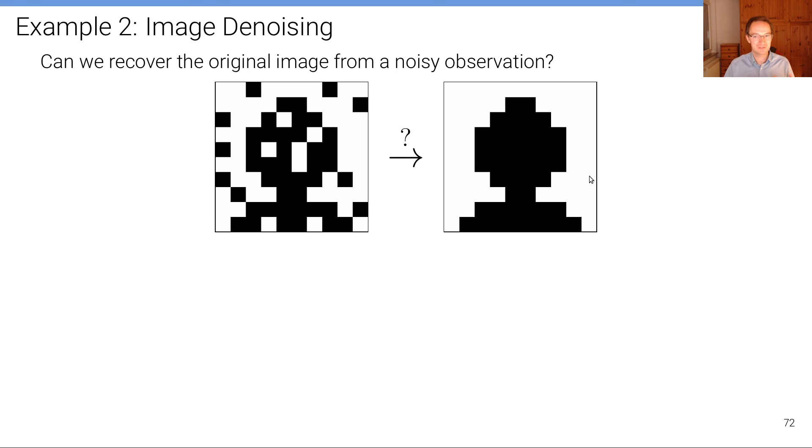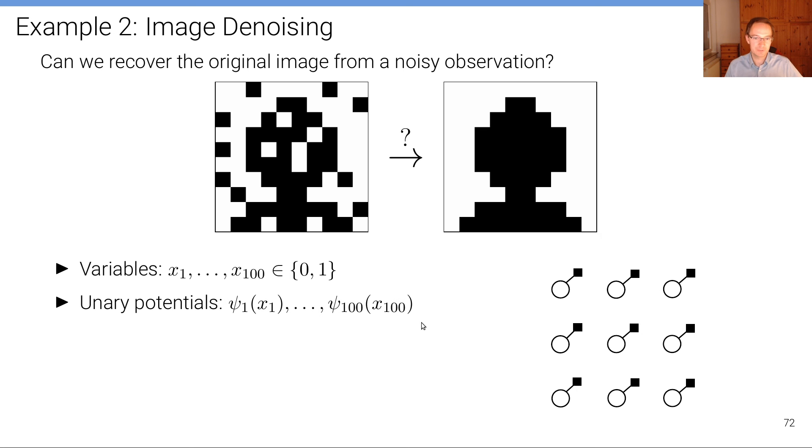We can use the same properties that we have seen in the stereo matching class, that namely nearby pixels are more likely to have the same value than to have different values—now not in terms of disparity maps, but here in terms of RGB value or binary pixel values. So if we model this using a Markov random field, and if we just assume unary potentials, this is what the model would look like. We have 100 variables because we have 100 pixels here. They are binary, and we just have unary potentials.